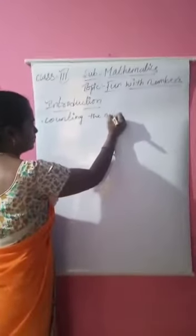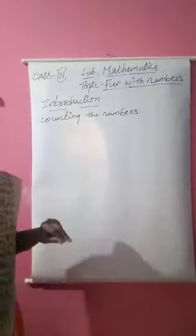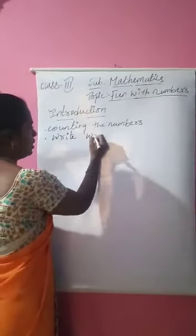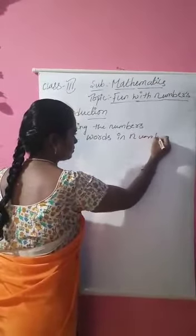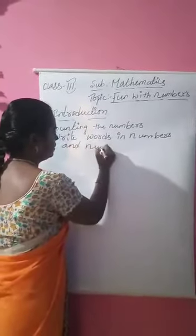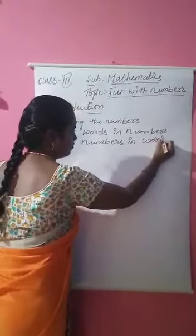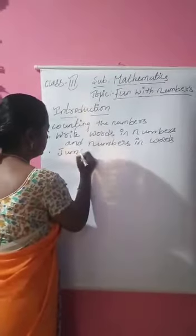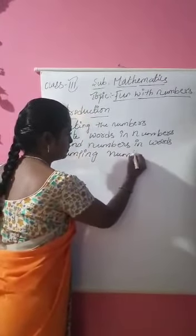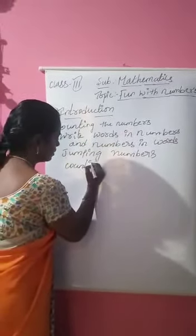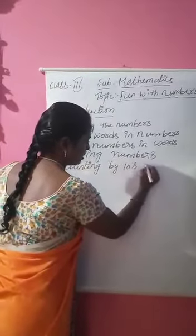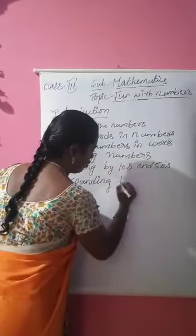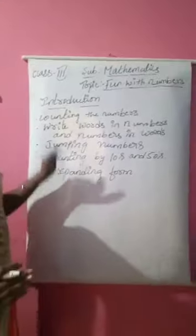First topic: counting the numbers. How you count — like that, you have to count the numbers. Second one: writing. Write words in numbers, and numbers in words. Words in numbers and numbers in words. Next one will be jumping numbers — counting by 10s and 50s. And next it will be expanding form. These are the topics we are dealing with in fun with numbers.